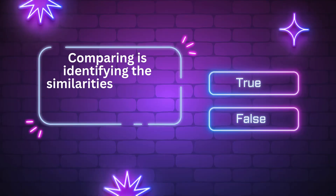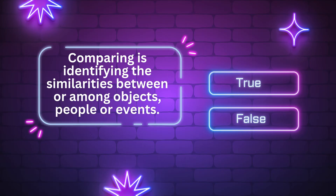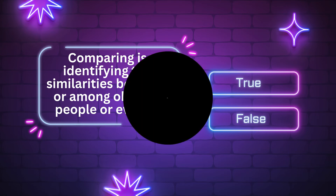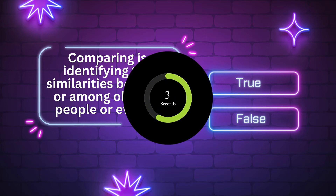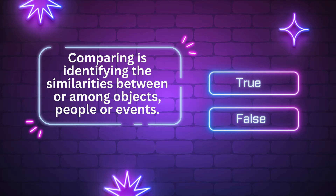Measuring is identifying the similarities between or among objects, people, or events. True or false? The answer is true.